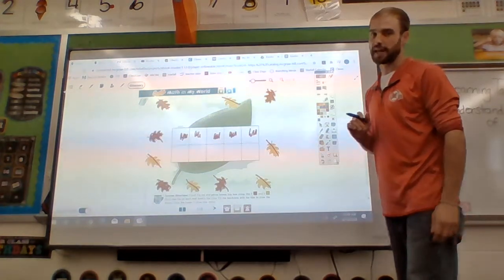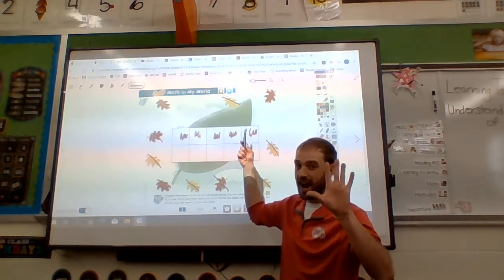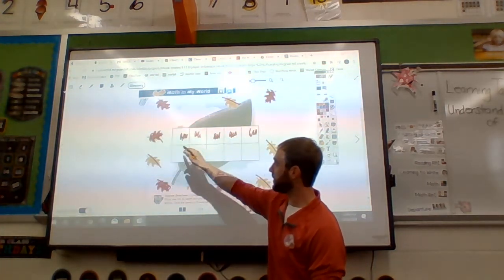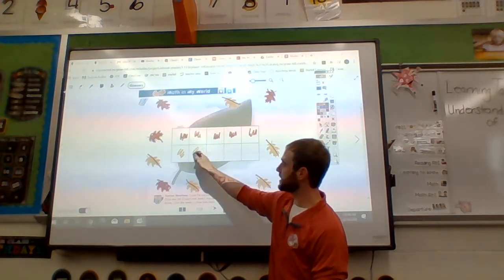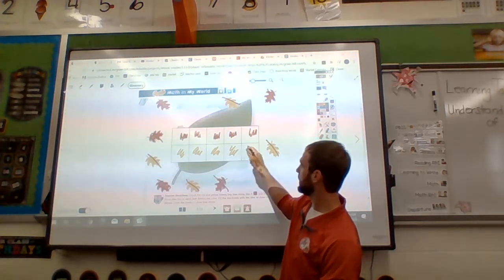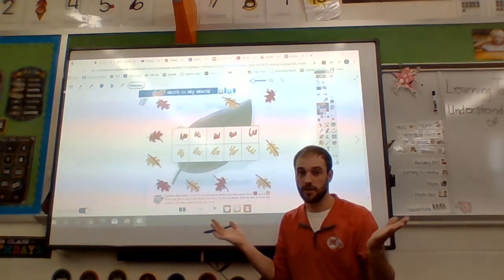Get your yellow crayon. We're going to count on. We know how many are here. 5. How many are there? 5. Let's count on. 5, 6, 7, 8, 9, 10. How many boxes did we color in all? 10.